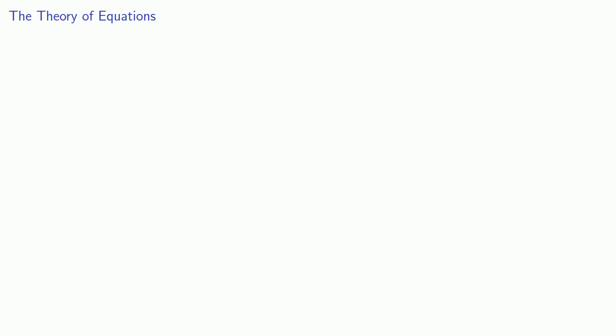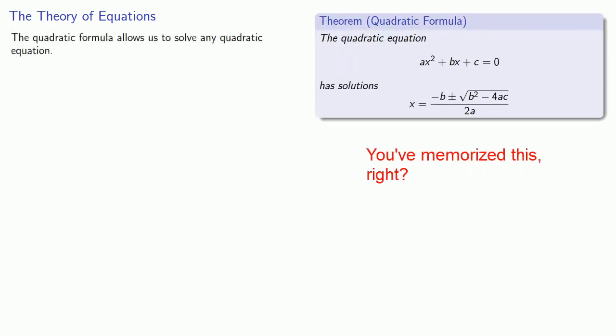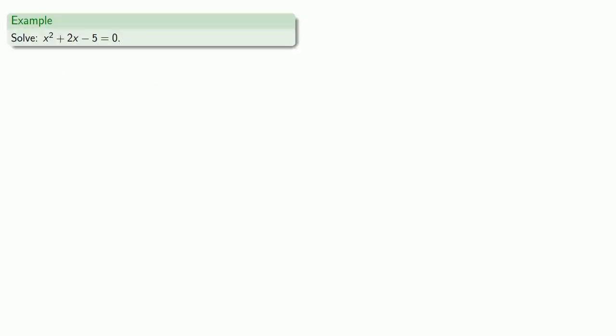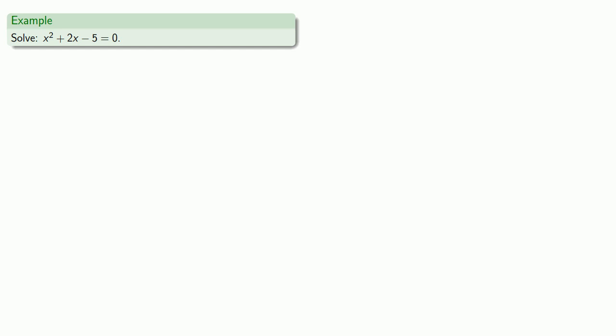One place to begin is with the quadratic formula. The quadratic formula allows us to solve any quadratic equation. However, not all solutions are created equal. For example, let's consider this equation: x squared plus 2x minus 5 equals 0. We'll use the quadratic formula. We'll check the fine print — the quadratic formula only works when we have the equation equal to 0, which we do.